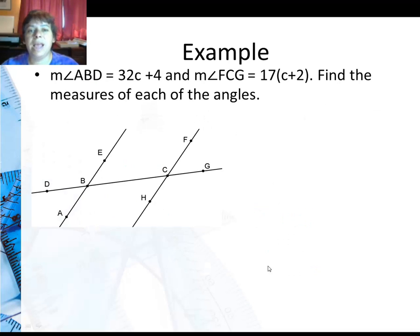Now we're going to look at some unknowns. So this is going to be a little trickier. So I'm going to go ahead and put these values in. A, B, D is 32C plus 4. And F, C, G right here is 17C plus 2. Notice the parentheses around the C plus 2. Well...